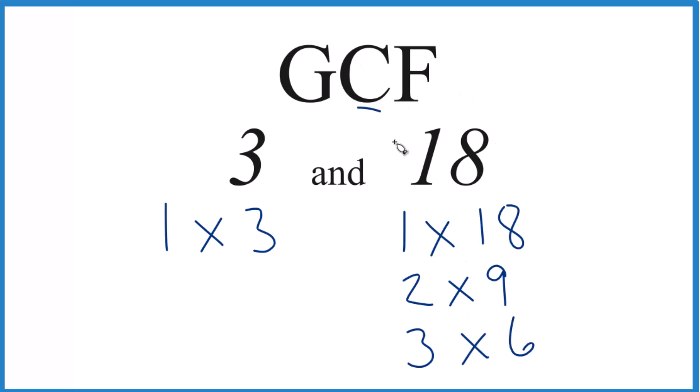Let's see what's in common here. So 1, that goes into 3, and 1 goes into 18, and then the only other one right here, 3, that's in common, and that's the greatest common factor.